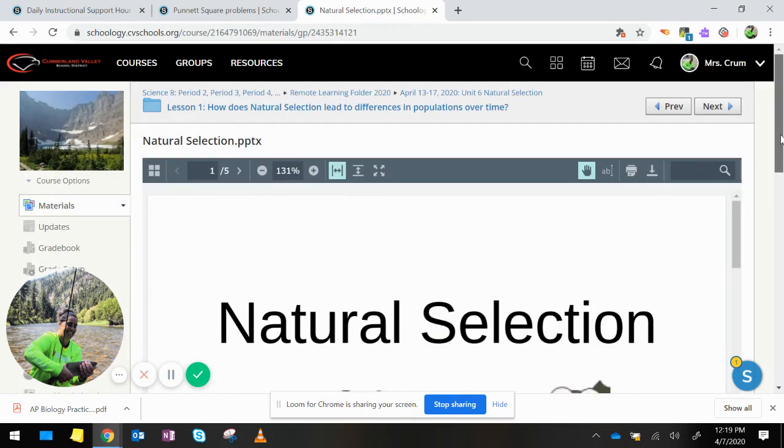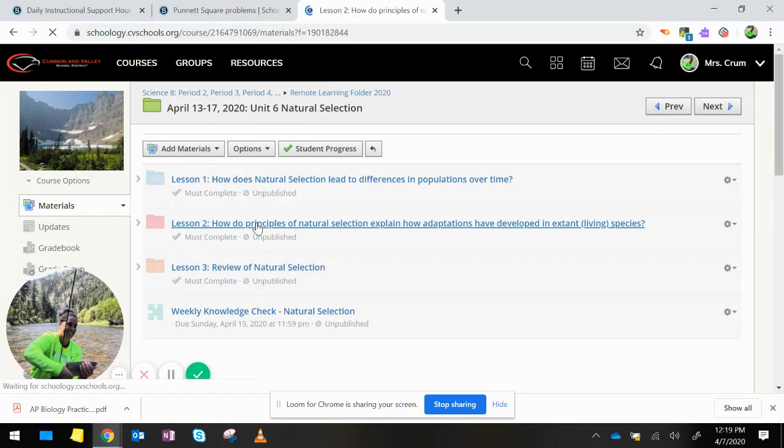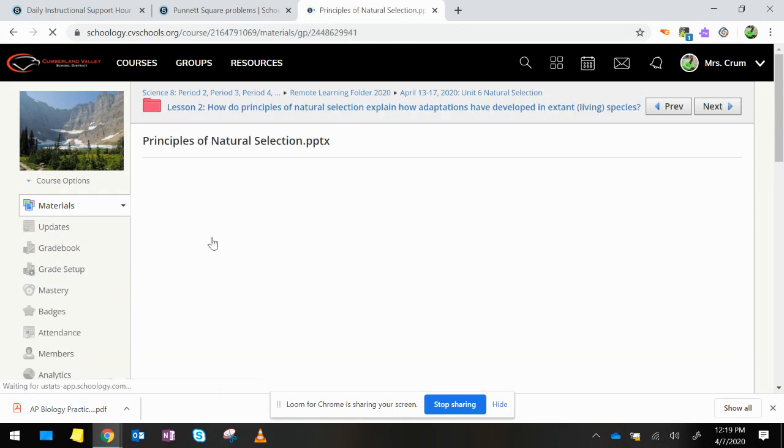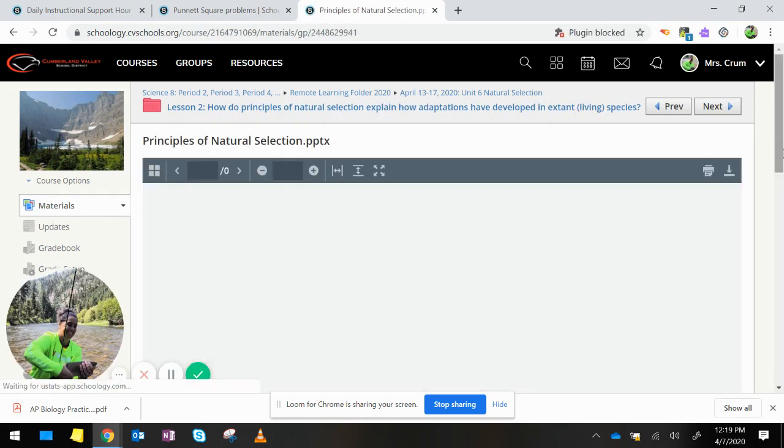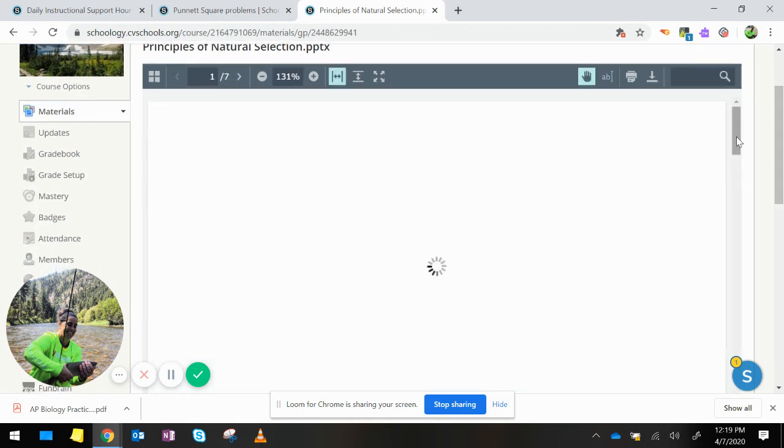The next lesson that we looked at, Lesson 2, we talked about how do principles of natural selection explain how adaptations have developed in extant species. In this lesson we actually went over the four main principles of natural selection.